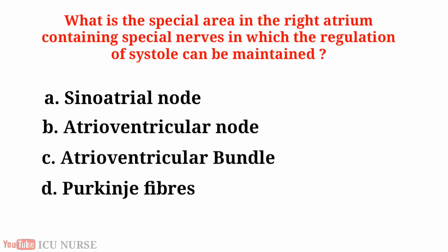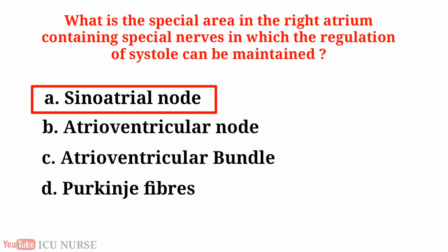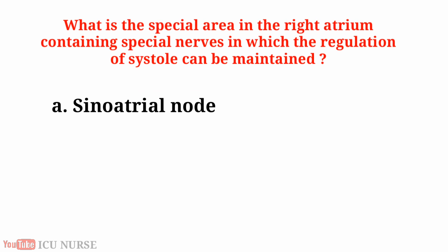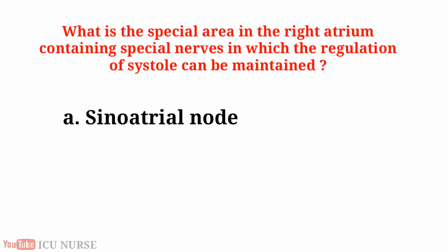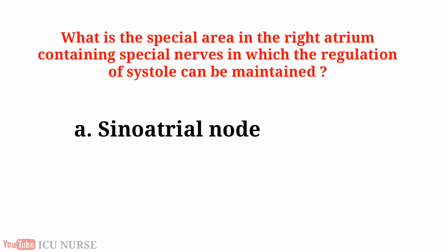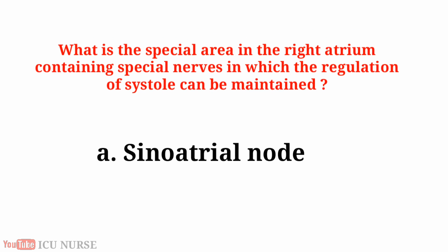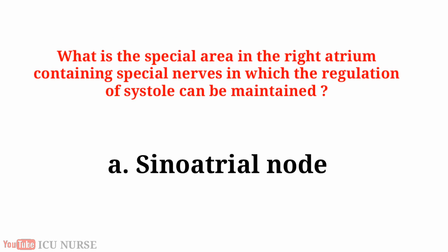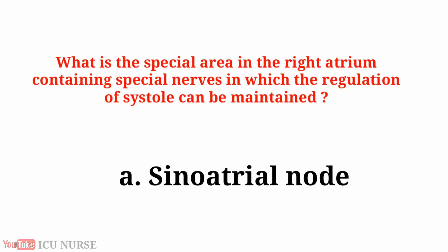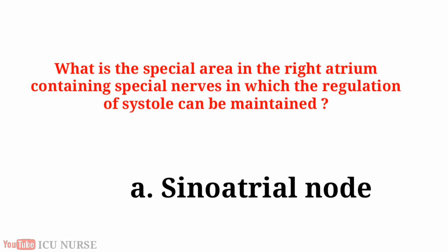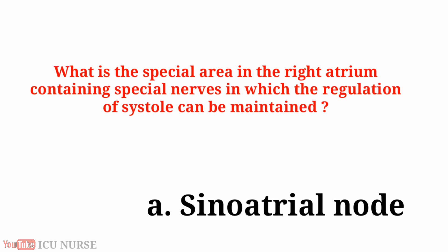The answer is A. Sinoatrial node. The sinoatrial node is the special area in the right atrium containing special nerves in which the regulation of systole can be maintained.